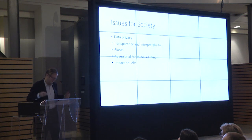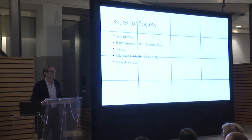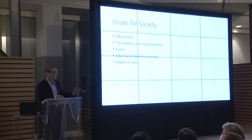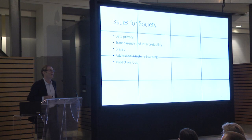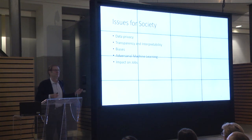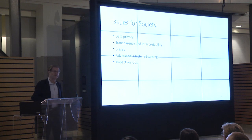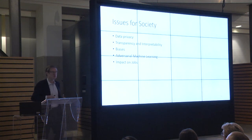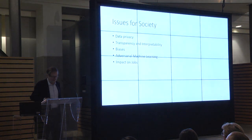Amazon had to abandon that particular application of machine learning. Going back to the credit decisions example, there's inevitably going to be bias because you don't have data on the loans you didn't make — you don't know whether a loan you turned down would have worked out well, because you simply didn't make it. So your data is going to be biased towards whatever lending strategies you've used in the past.